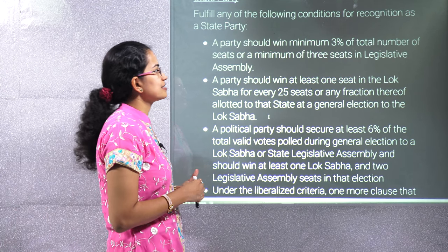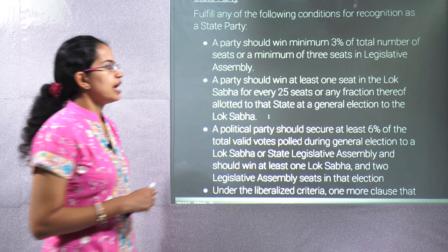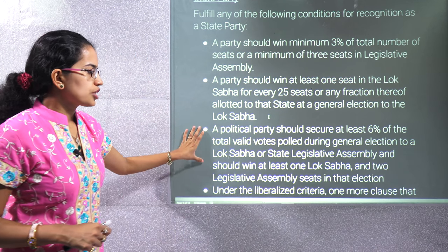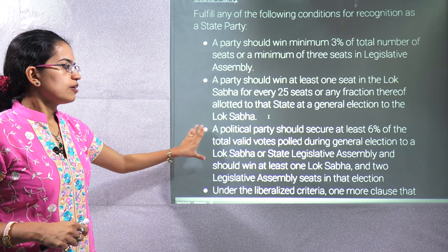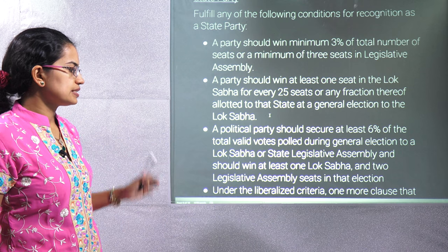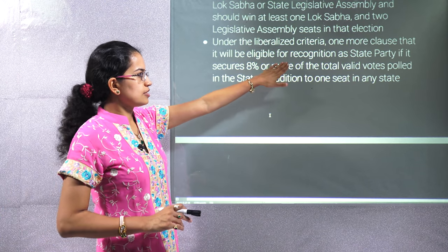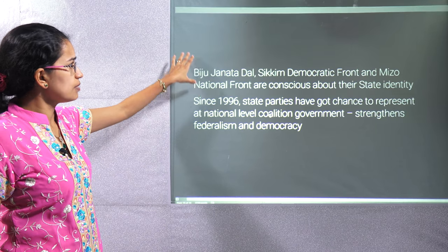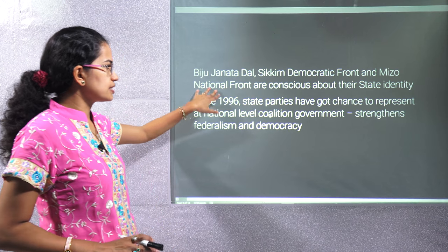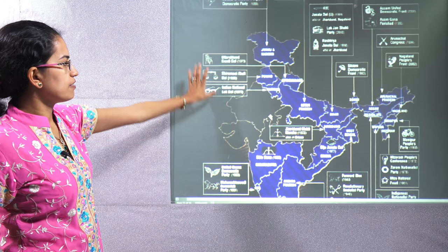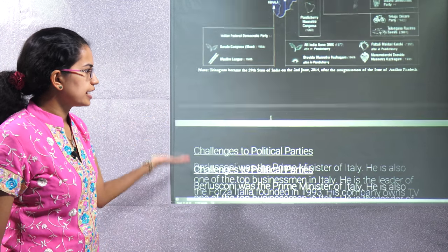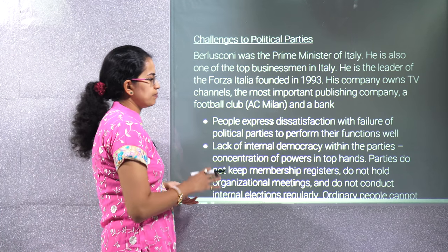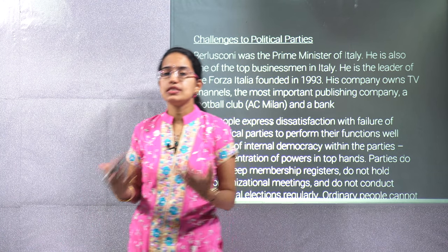For state party recognition, the criteria are: winning a minimum of 3% of total seats and minimum 3 seats in the state legislature; winning at least 1 Lok Sabha seat for every 25 seats; or securing 6% of valid votes in an election to Lok Sabha or state assembly and winning at least 1 Lok Sabha seat and 2 legislative assembly seats; or securing 8% or more of total valid votes polled in the state. Some common state parties are Sikkim Democratic Front, Mizo Nationalist Front, and Biju Janata Dal. India has around 750 recognized political parties.